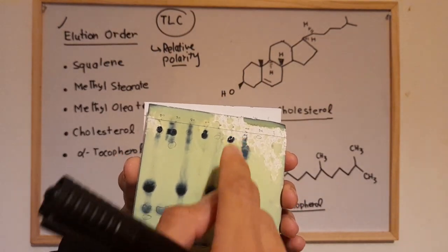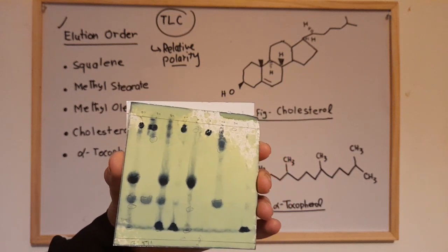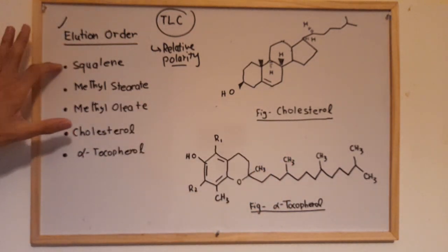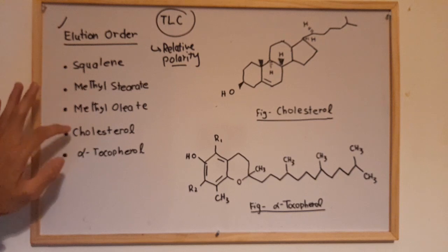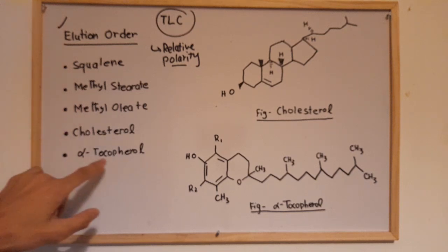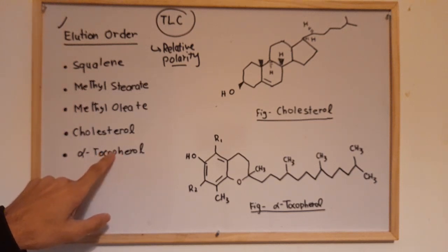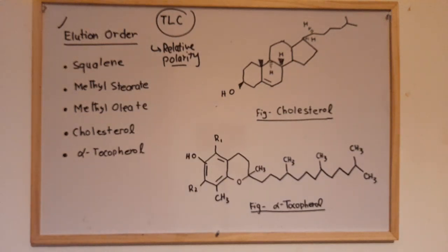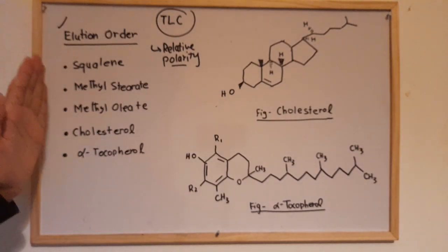We have five components: squalene, methyl stearate, methyl oleate, cholesterol, and alpha-tocopherol — also called vitamin E. The basic question is: which component will elute first?